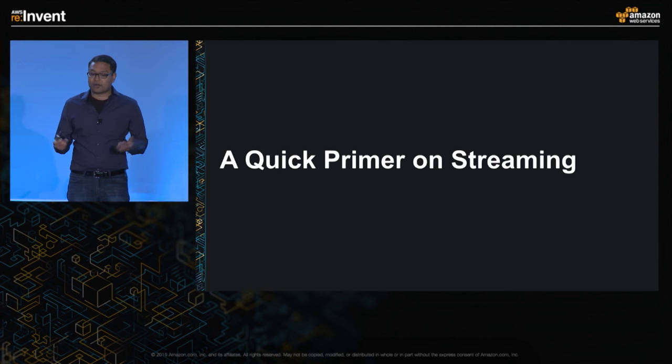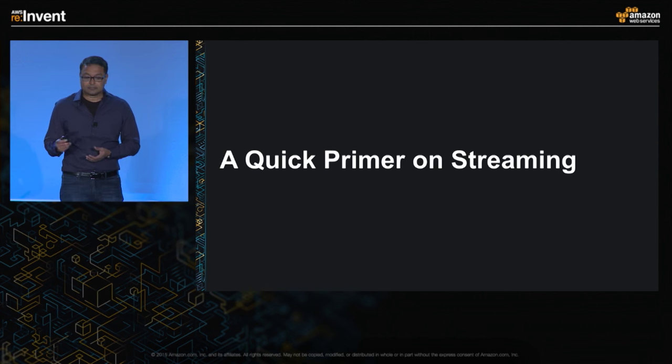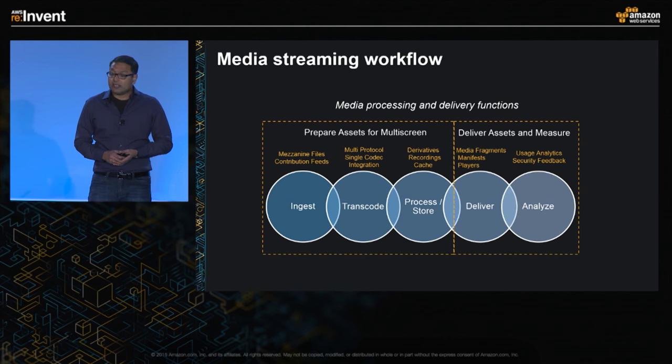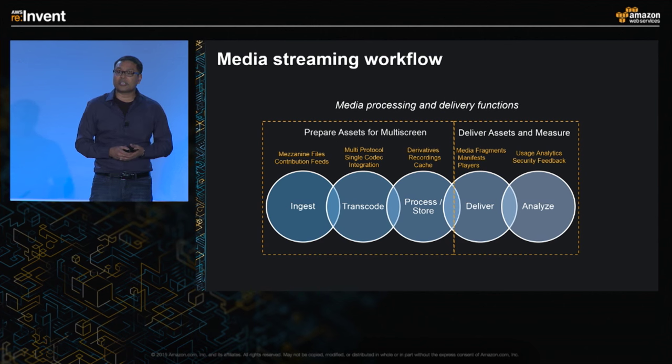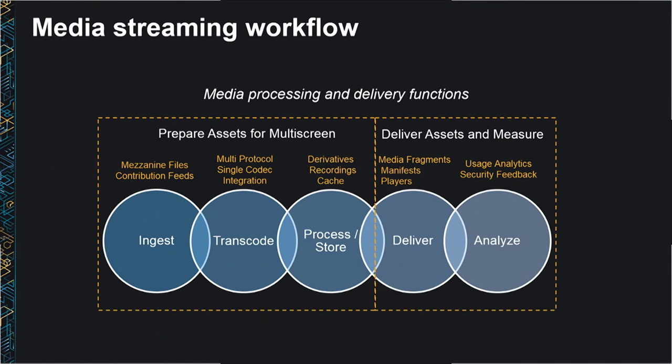Let me start with a very quick primer on streaming. Any media workflow has five major functions. You can broadly separate them into processing of content and delivery of content. Processing has three major functions: ingest, which is how you get the contribution feeds; how you transcode this content; how you process, store, and prepare assets for delivery. Then how you deliver this content through a CDN. And finally, what analytics and metrics do you gather so that you can feed them back into your media workflow.